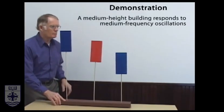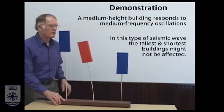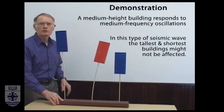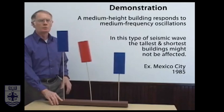If I move it more briskly, I can dial in the rate of horizontal oscillation so that I move the center building, the intermediate height building, and the short and the tall ones are barely moving.